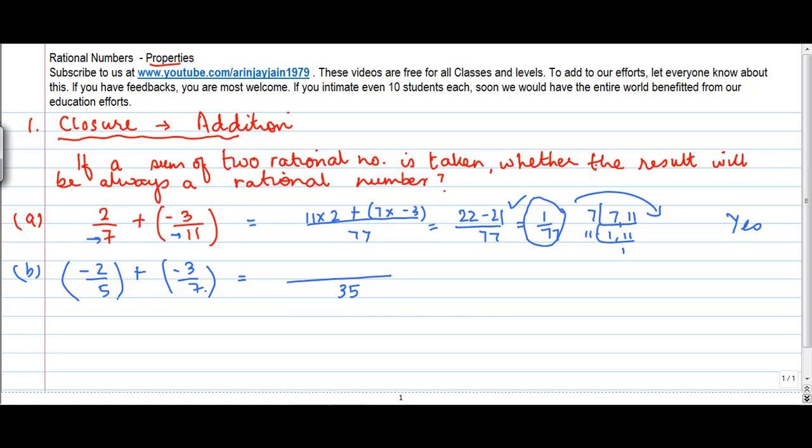35 goes into 5, 7 times, 7 into minus 2, minus 14, plus 35 goes into 7, 5 times, 5 into minus 3 gives me minus 15, which is minus 29 by 35. Again, a rational number.